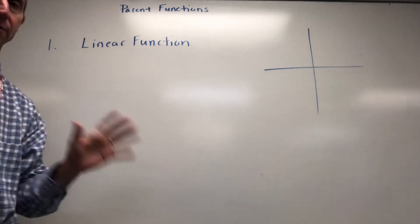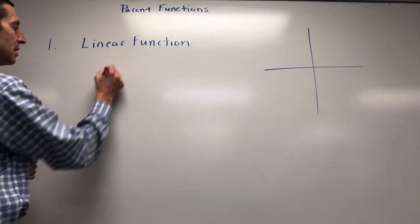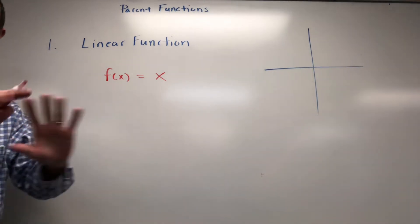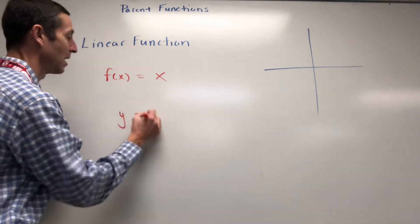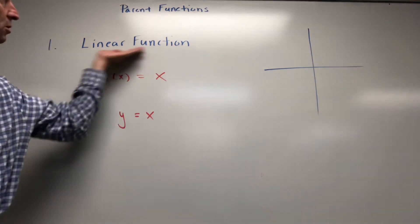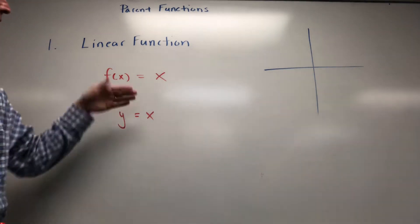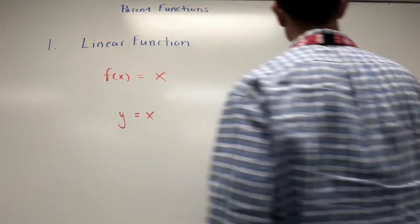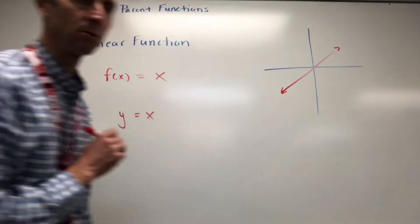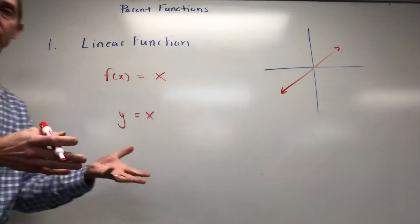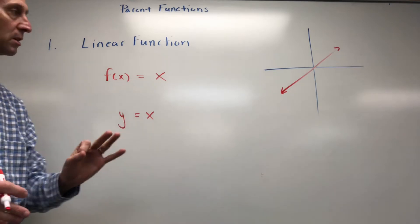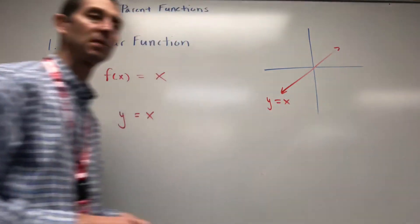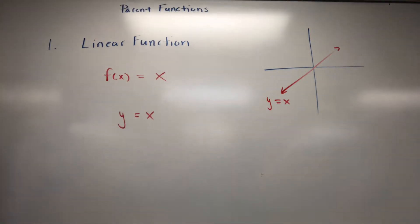The first one is called a linear function. So f of x equals x — and a lot of times when people go to graph it, they just write y equals x. Your linear function is a straight line that goes right through the origin. That is your first parent function.